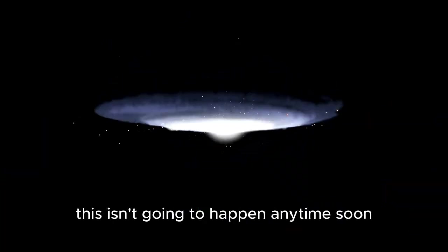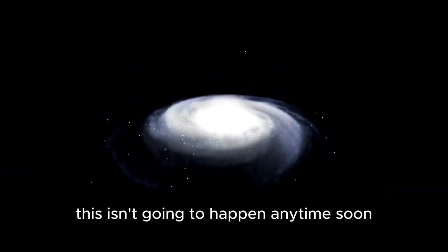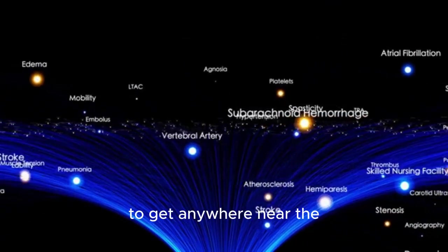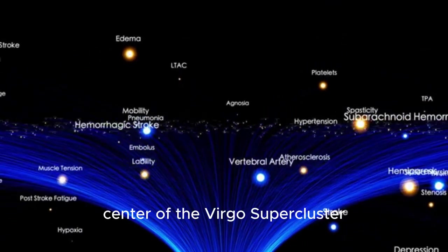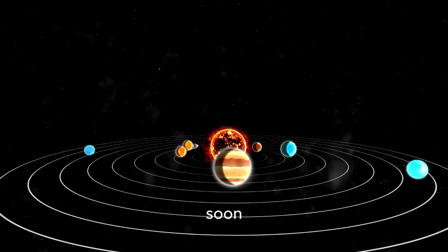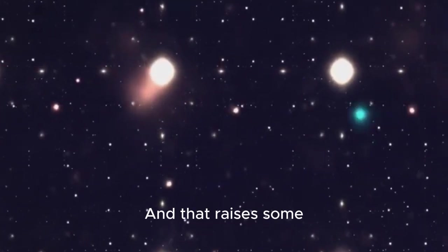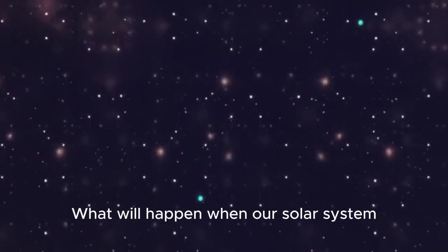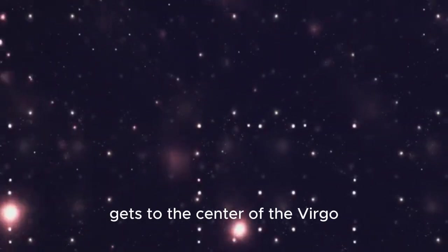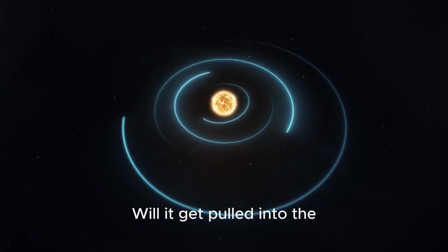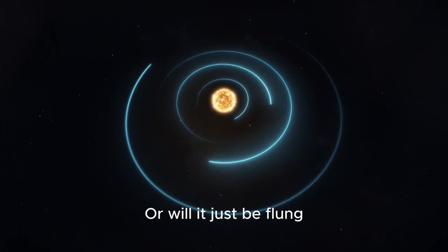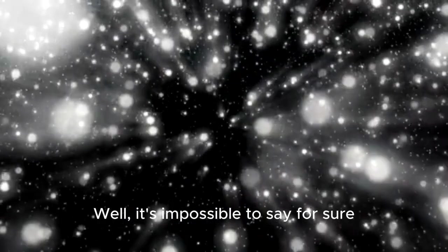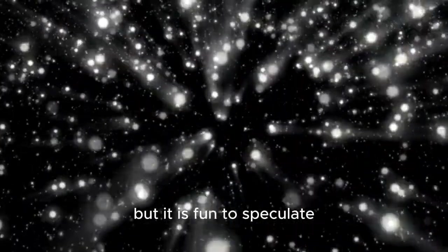Now, don't worry, this isn't going to happen anytime soon. It'll take billions of years for our solar system to get anywhere near the center of the Virgo supercluster. But even though it won't happen anytime soon, it is still happening. And that raises some interesting questions. What will happen when our solar system gets to the center of the Virgo supercluster? Will it get pulled into the supermassive black hole? Or will it just be flung out into intergalactic space? Well, it's impossible to say for sure, but it is fun to speculate.